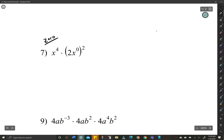Well, anything to the 0 is 1. So any number or anything to the 0 power equals 1. So really, if we look at this here, we have x to the 4th times quantity 2.